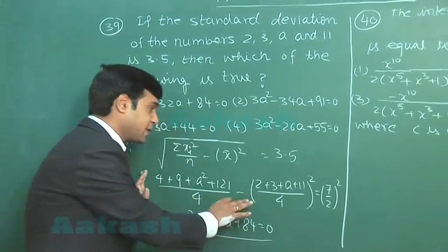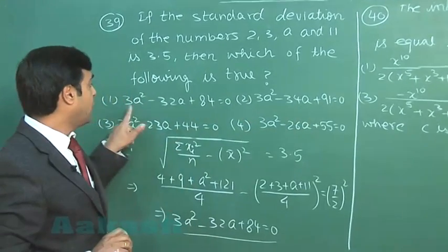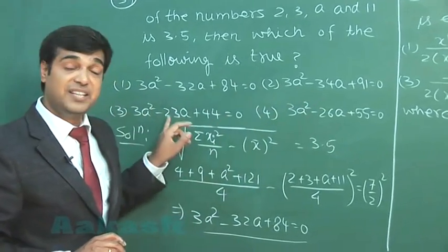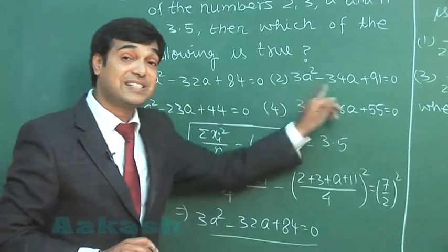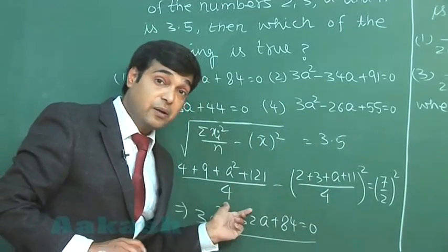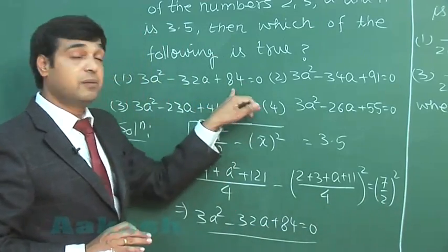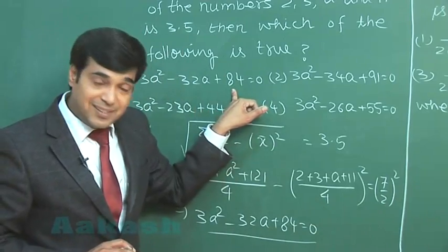Once we obtain this expression, if I put A equals 0, I will get some constant value. We can see on substituting A equals 0 in these four options, all constants are different. When you put here A equals 0, on taking this 7 by 2 square on LHS, you will obtain just one term, 84. This is clear.